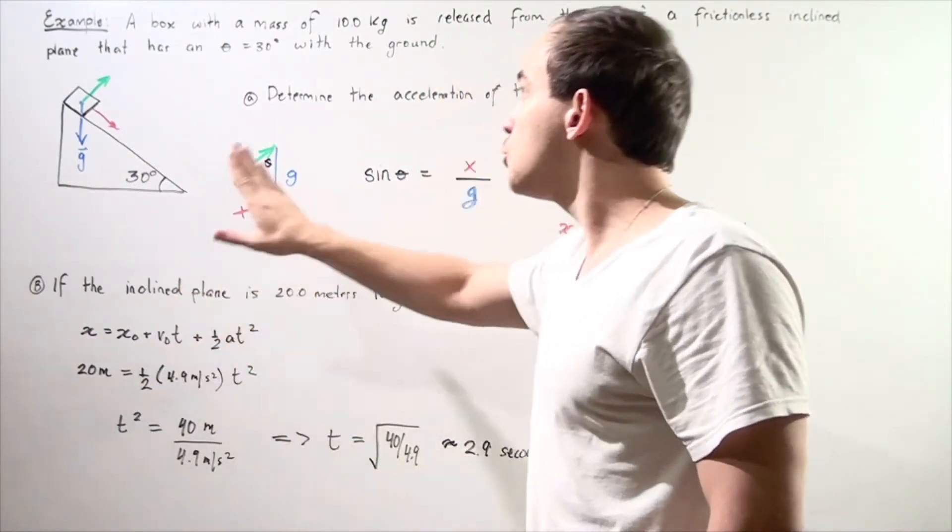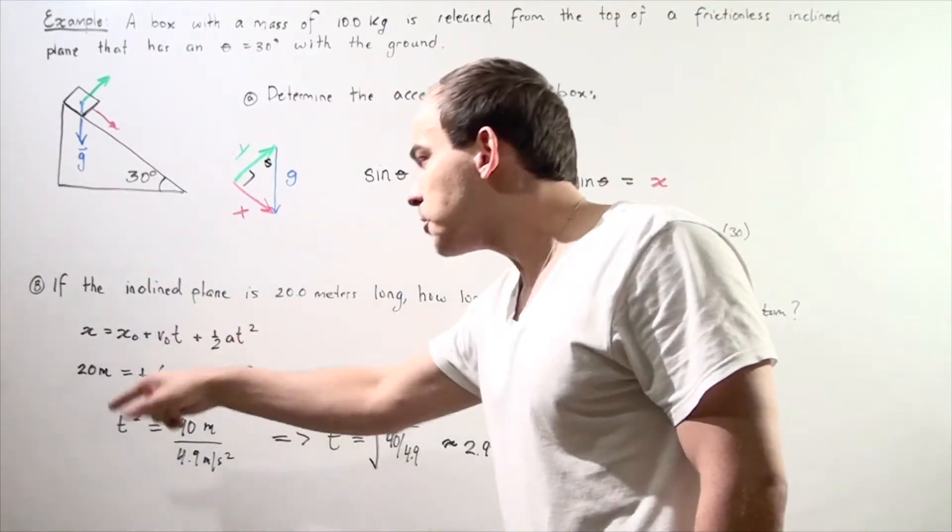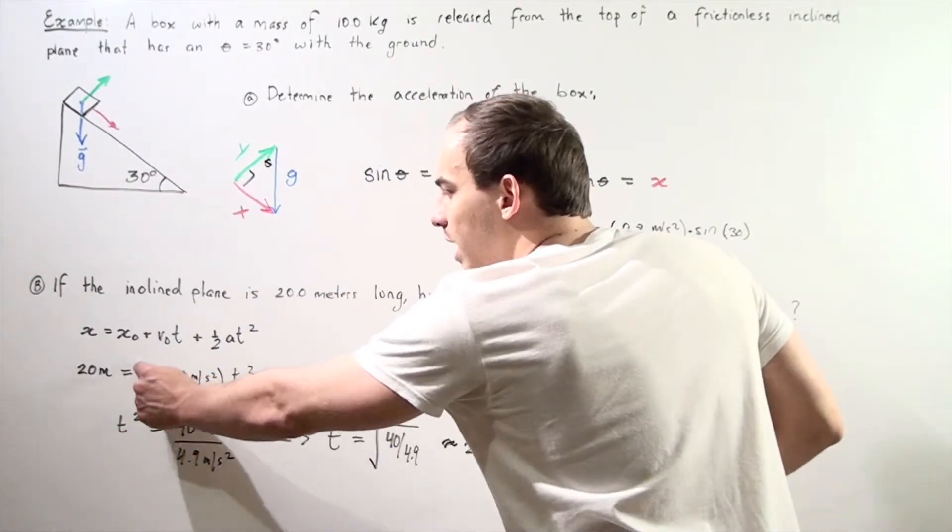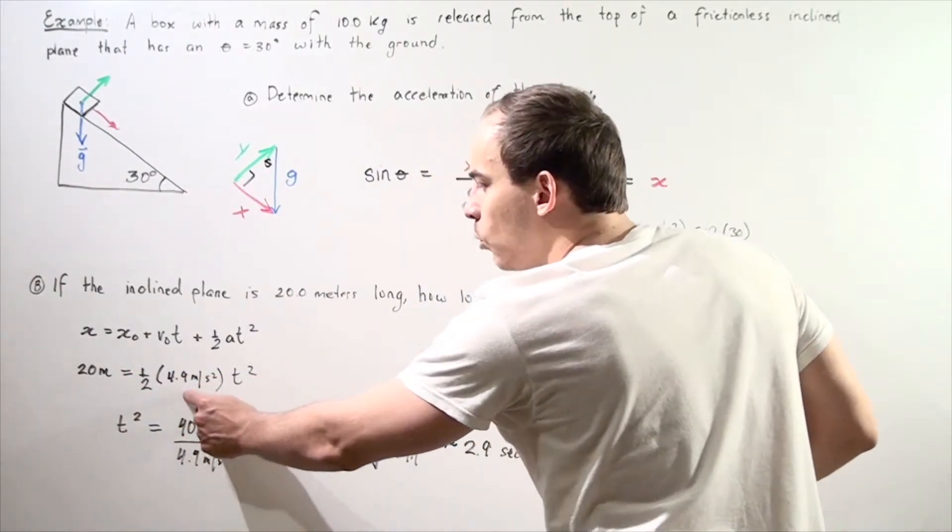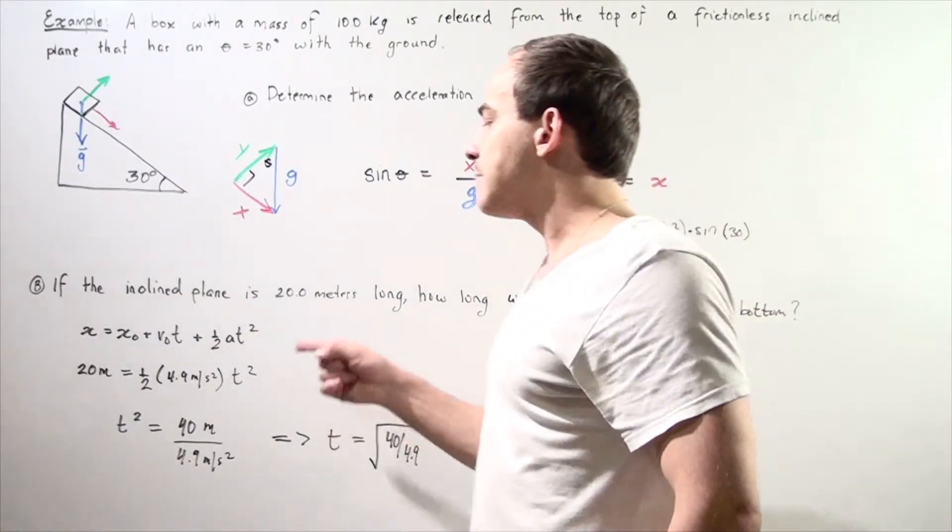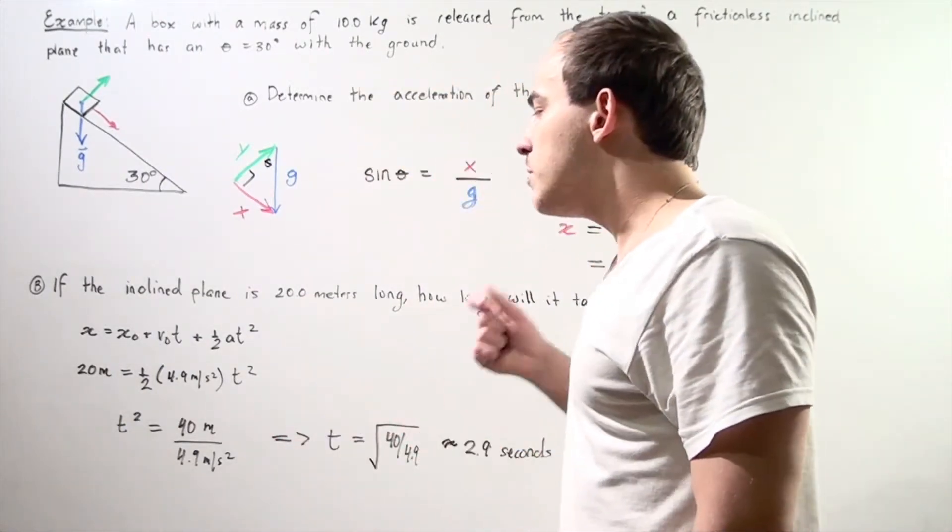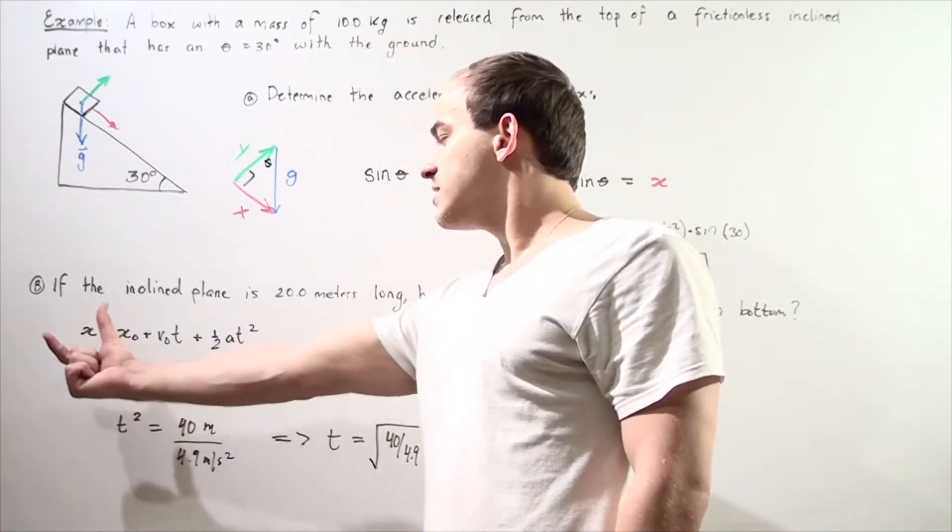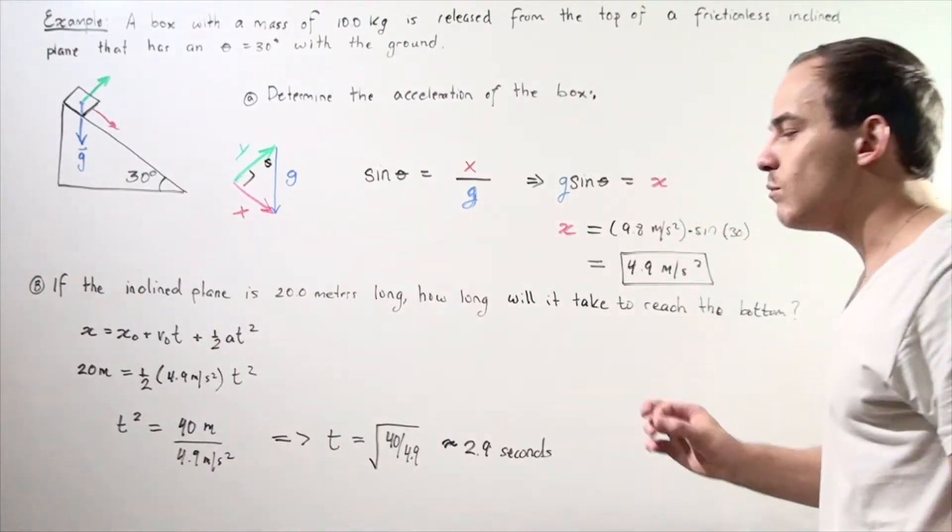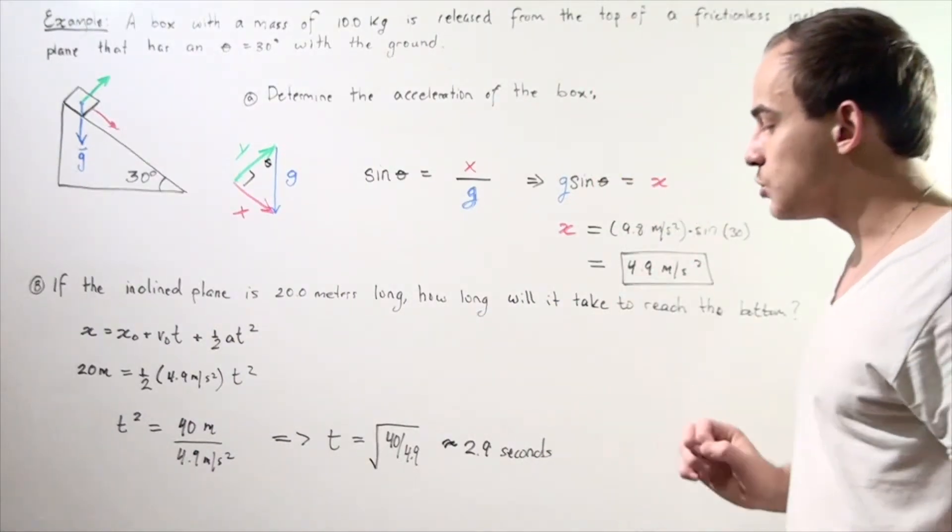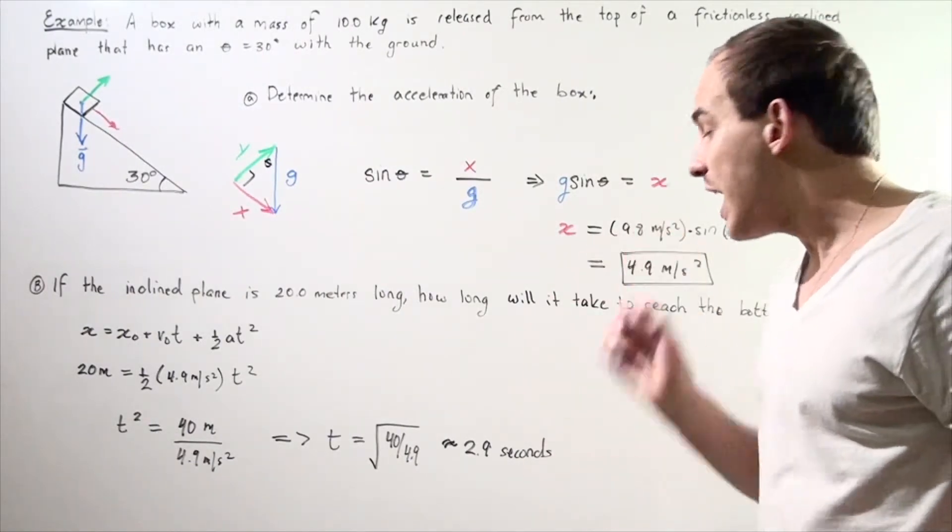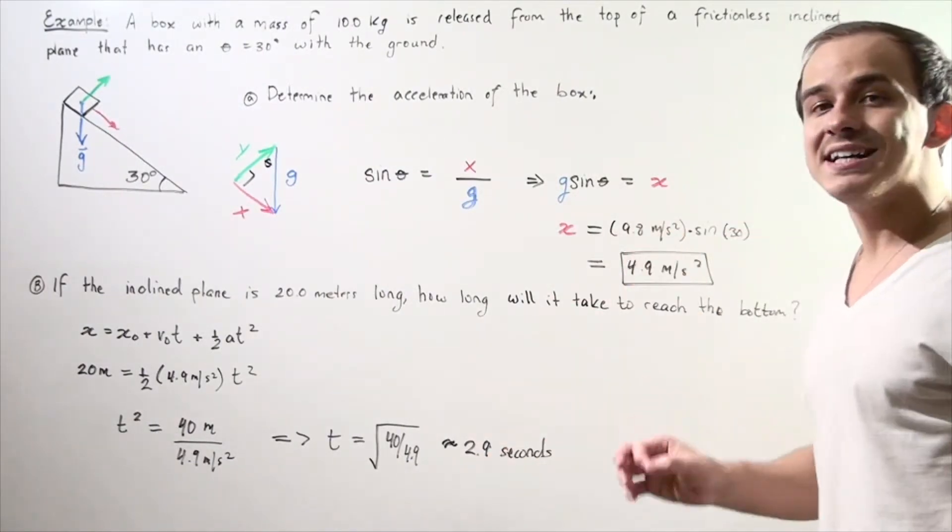Now our initial velocity, we choose to be 0, so this term cancels out, and we are left with 20 meters equals one half multiplied by 4.9 meters per second squared, our acceleration, multiplied by time squared. So, we bring all the numbers over to one side, and t squared to the other side. We take the radical of both sides, and we find that time is equal to the square root of 40 divided by 4.9, which is approximately 2.9 seconds.